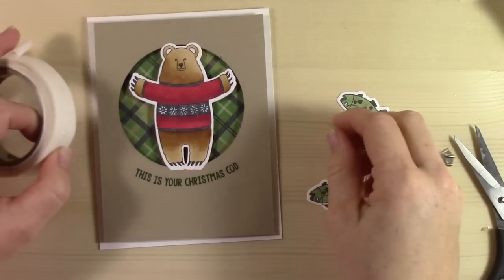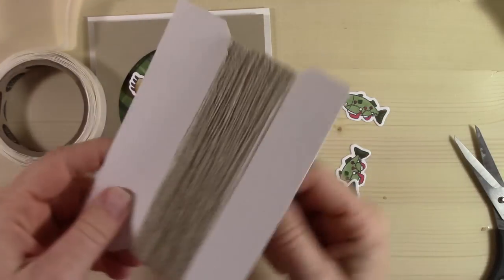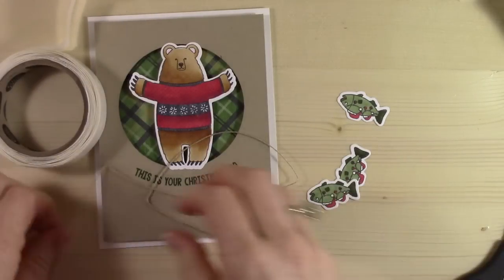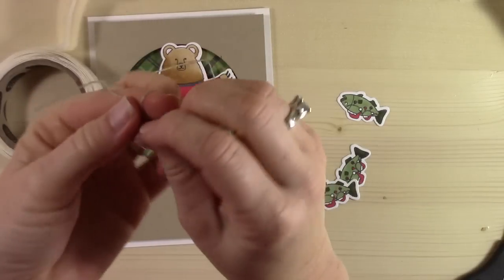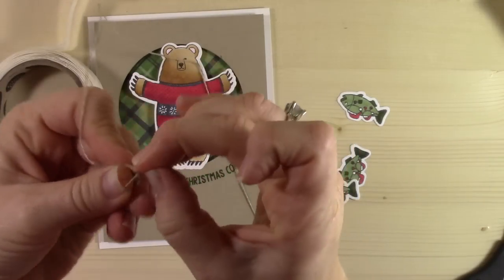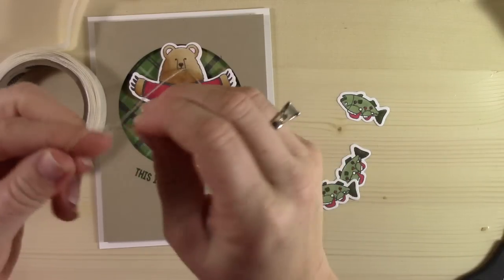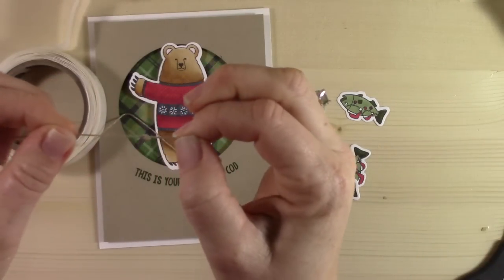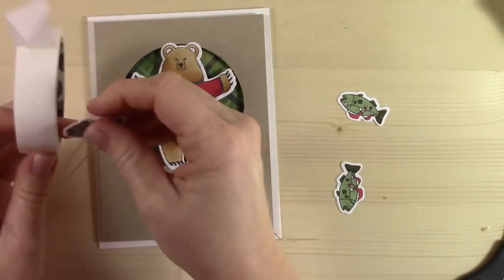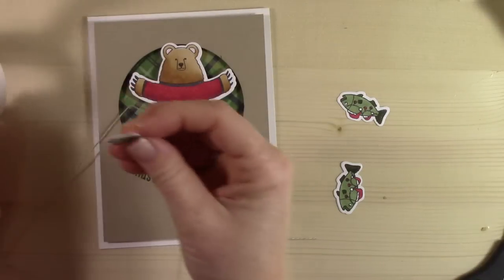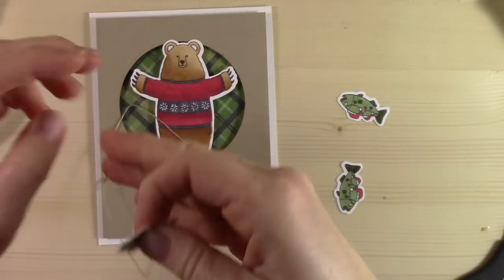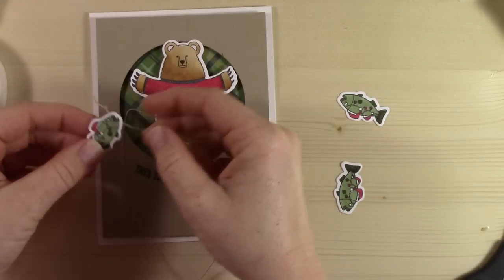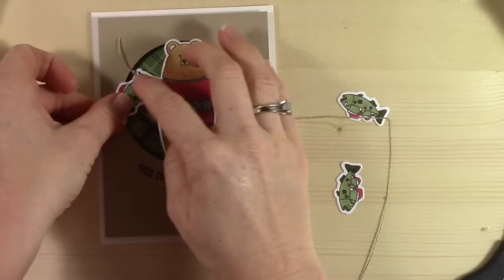I'm super excited about it and I think it's so funny. It says 'This is your Christmas cod,' which is a type of fish. I'm sure you're familiar with that. I don't have my—oh, here's my glue dots, excuse me. The way I'm doing this is I've got some linen thread here. I'm just gonna take a pretty long piece and roll it around here and tie myself a little knot.